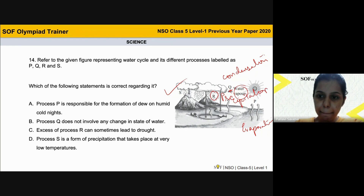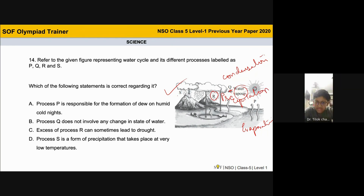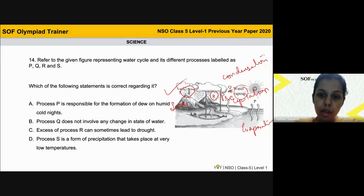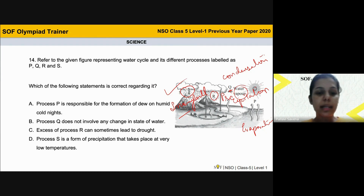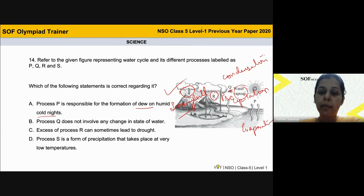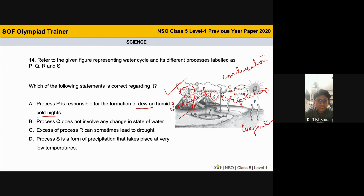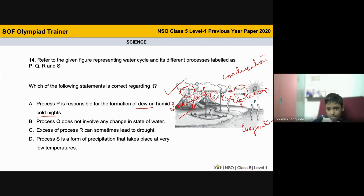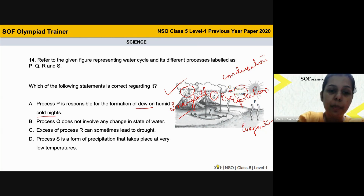What about S? S is also precipitation, but precipitation in the form of snowfall, whereas R is precipitation in the form of rainfall. You can see the small dots drawn there — that represents snow. So S is snowfall. Now, statement A says process P is responsible for the formation of dew on humid cold nights — is evaporation responsible for dew formation? No — condensation is responsible for that.